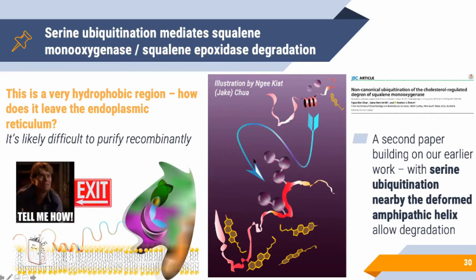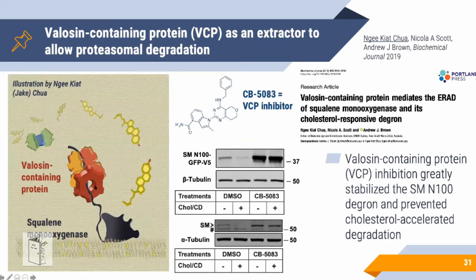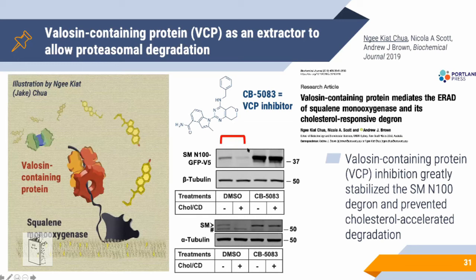We had a candidate: FAF1 (FAS-associated factor 1), a protein we think actually pulls squalene monooxygenase out of the ER membrane. It's involved in degradation of other ER substrates too. When we added an inhibitor to block this protein, and then added cholesterol, there was a 10 to 15-fold increase in full-length squalene monooxygenase — compared to the DMSO control where the protein is normally degraded — strongly indicating FAF1 is the protein responsible for extracting squalene monooxygenase.